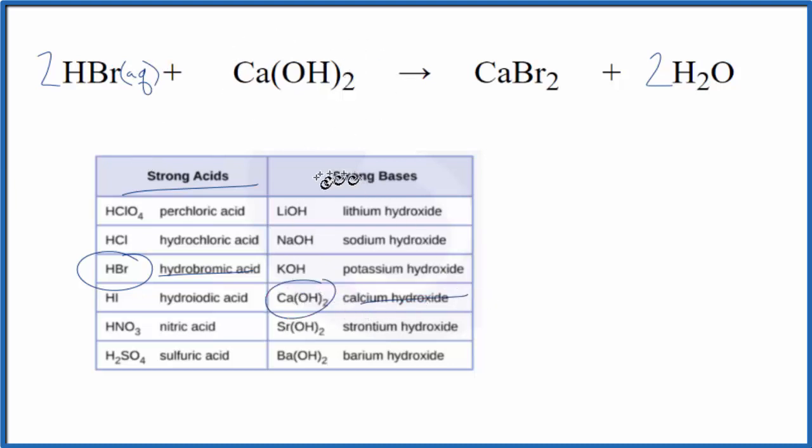Calcium hydroxide, that is a strong base, so it's also going to dissociate into its ions. We're going to put aqueous after that. Bromides, in general, are soluble, and then water, that is a liquid. So we have our states.